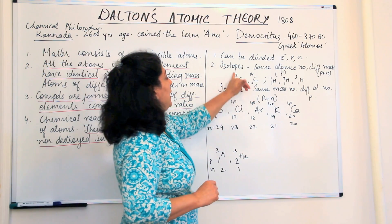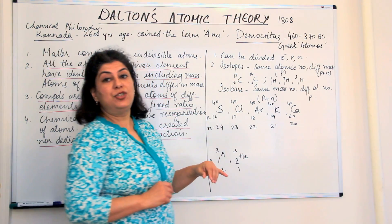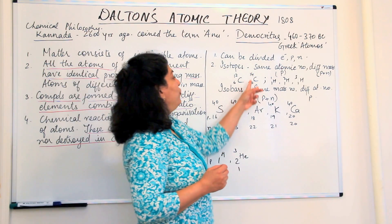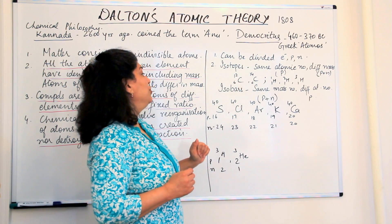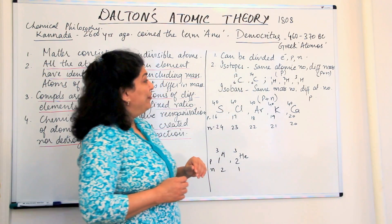Carbon-12 has six protons and six neutrons and hence its mass is 12. While carbon-14 has six protons but eight neutrons and hence its mass is 14.